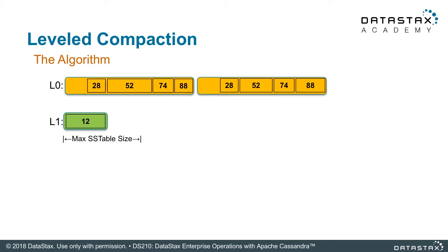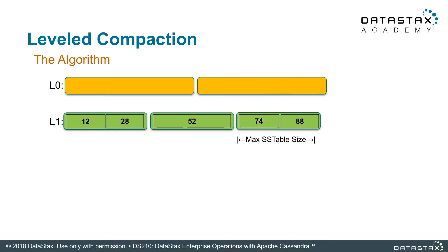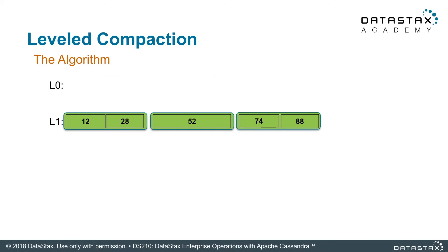Let's do another compaction - we just went over the max size. Now we create a new file and do another compaction with those entries. It's important to note that level zero is really the landing place - everything in level zero will get promoted right away. As we compact, everything's going beyond the max SSTable size. Level one is now ready. However, with the max SSTable size comes another parameter: the maximum size for level one.